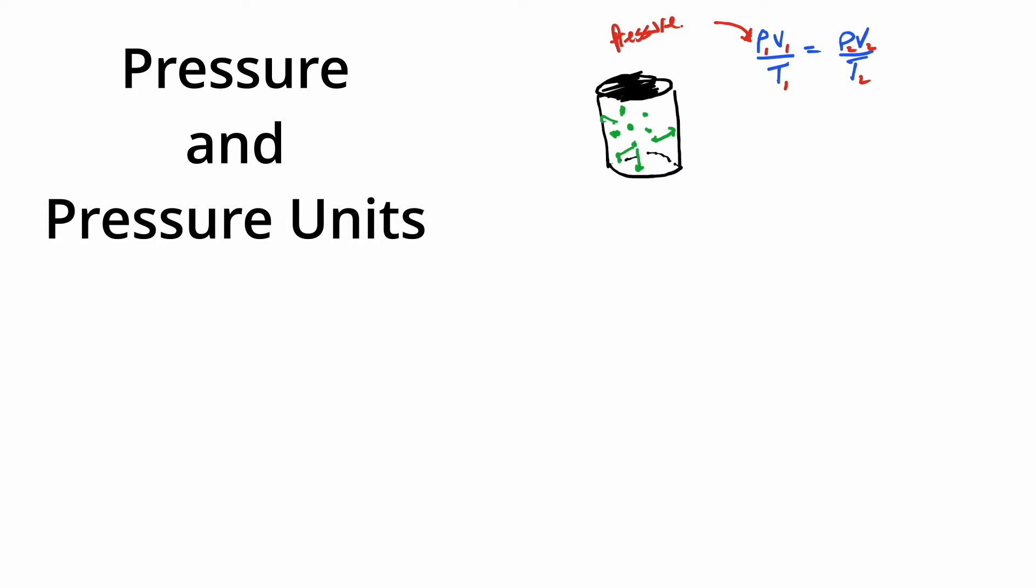Okay, so let's talk about the different units of pressure. You have atmospheres, you have torr, and then you have mmHg. mmHg is millimeters of mercury. Mercury is Hg.